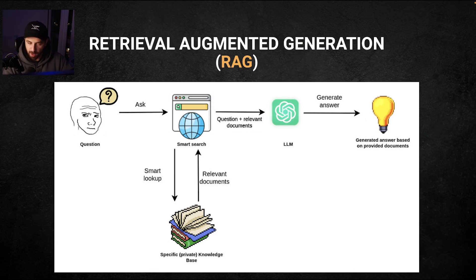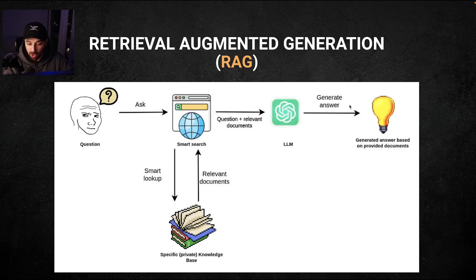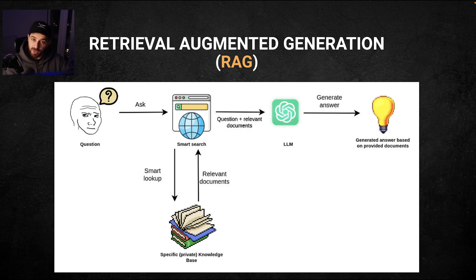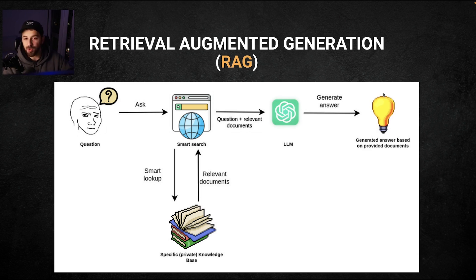Basically, a user makes a request to your app. Your app is going to search and look up your vector database to find the most relevant documents based on what the user asked. Then it provides both that question and those relevant documents to an LLM — to ChatGPT, for example — and based on this it generates a much higher quality response. For my children's book app, a user comes and makes a request for a children's book. The app makes a request to the embeddings API to find the closest books to this request. If a parent wants a comedy book for a child who is 10 years old, the app looks up children's books in the comedy category for children between 10 and 12 years old, retrieves the top five closest to this request, sends that request combined with those five books to the LLM, and generates a much higher quality book. That's what Retrieval Augmented Generation is.